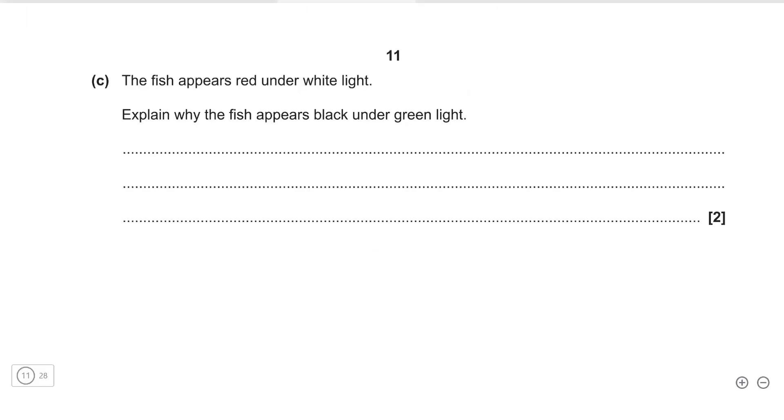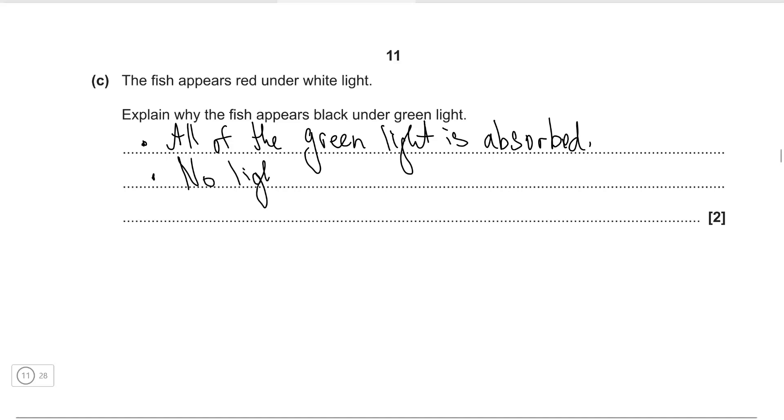Okay next one the fish appears red on the white light explain why the fish appears black on the green light well if it appears black this means that all of the green light has been absorbed and if it appears black as well and then no light or very little light is reflected.